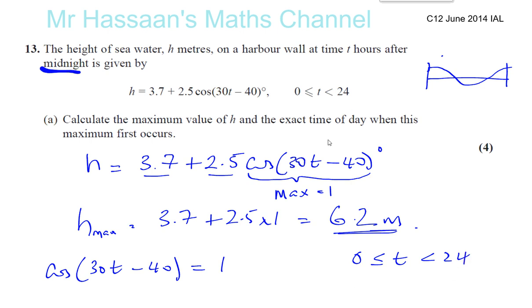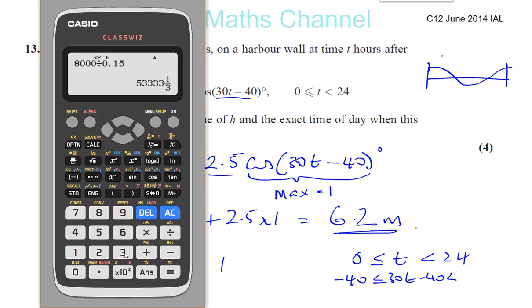We've got to change it so it says 30t minus 40. So we've got 30 times 0 minus 40, which is minus 40. And we've got 30 times 24, which is 720 minus 40, which gives us 680.